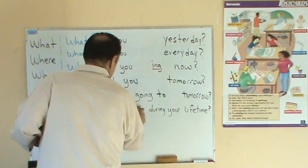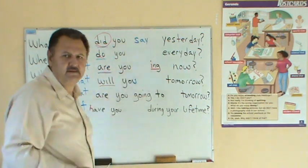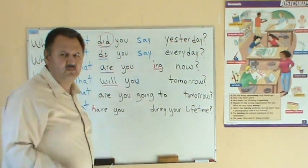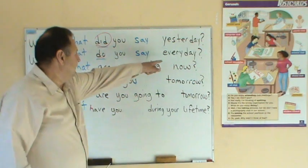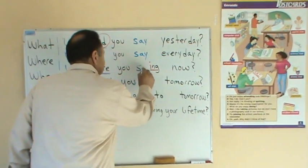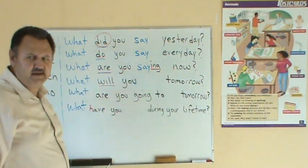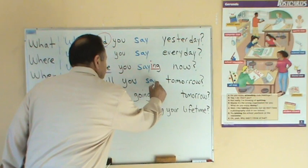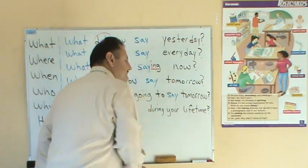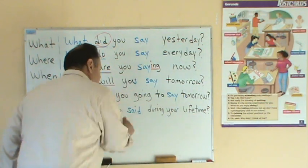Look: What did you say? — ¿Qué dijiste? What do you say? — ¿Qué dices? Here, let's work through the tenses. What did you say? What are you saying? — ¿Qué estás diciendo? What will you say? What are you going to say? — ¿Qué vas a decir? What have you said during your lifetime? — ¿Qué has dicho durante tu vida?